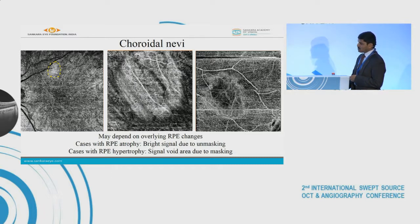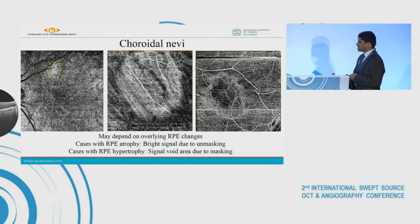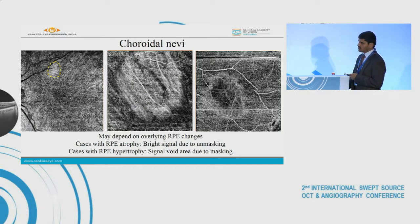If there is RPE atrophy over the lesion it probably shows as a bright signal due to unmasking, and if there is RPE hypertrophy, there would be masking and it could be seen as a signal void area.